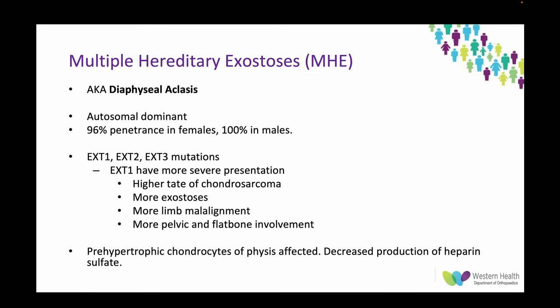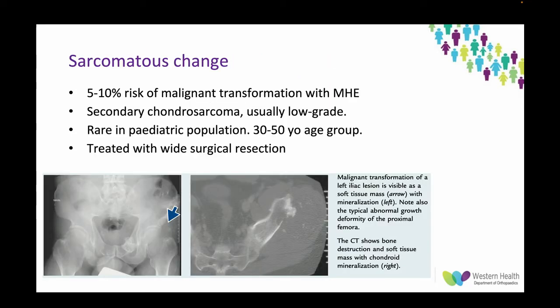This leads to multiple osteochondromas and growth disturbance. A lot of these patients have short stature. There's a 5–10% risk of malignant transformation in MHE compared to 1% for solitary osteochondroma. Secondary chondrosarcoma is usually low grade and very rare to see in the paediatric population — you should be thinking about this in the 30–50 year old age group, treated with wide surgical resection. Imaging shows the characteristic coxa valga from a lesser trochanter lesion, and at the pelvis level you can see mineralisation and destruction of medullary continuity with soft tissue expansion.